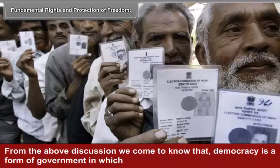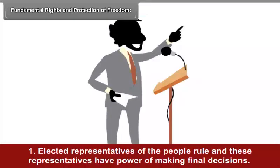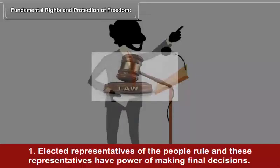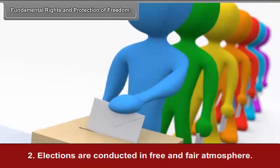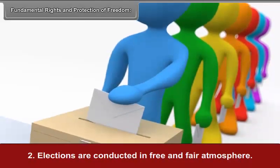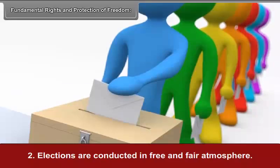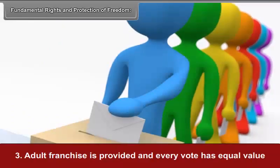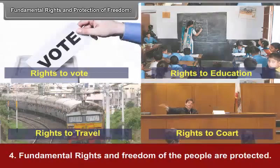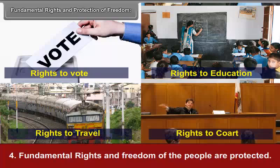From the above discussion, we come to know that democracy is a form of government in which: first, elected representatives of the people rule and these representatives have the power of making final decisions; second, elections are conducted in a free and fair atmosphere; third, adult franchise is provided and every vote has equal value; and fourth, fundamental rights and freedom of the people are protected.